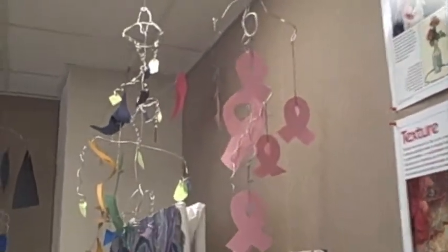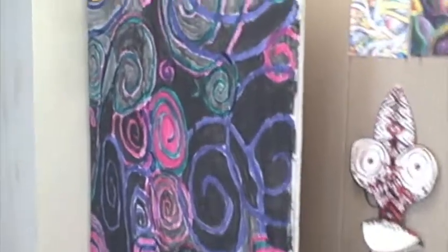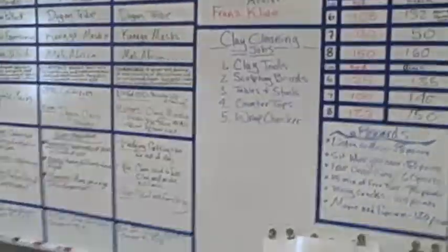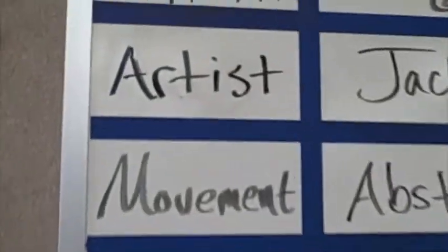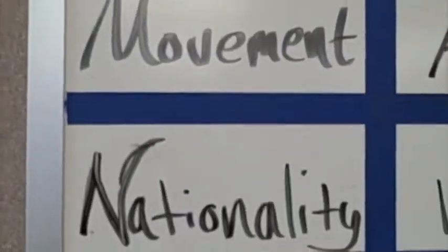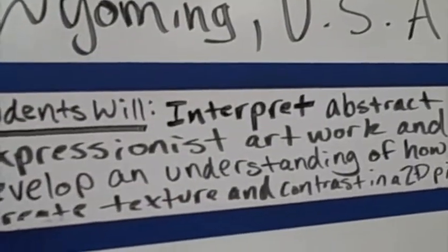Here are more Calder mobiles, and a nice painting my eighth graders did as a backdrop for a music video we're creating. Here is the agenda board — this has everything we're doing for whatever project we're working on. I focus on the artist, the movement, the nationality, then the objective, the project at hand, and always the terms that go along with it.